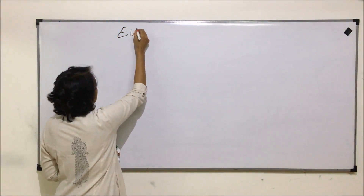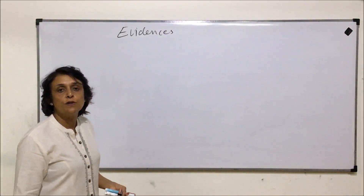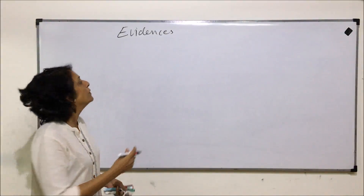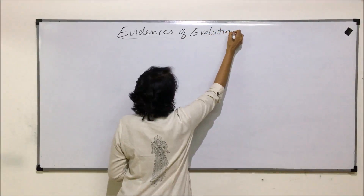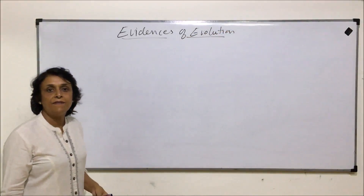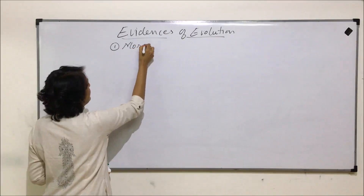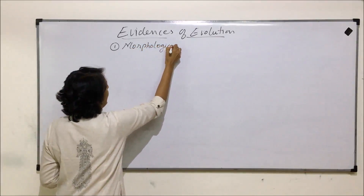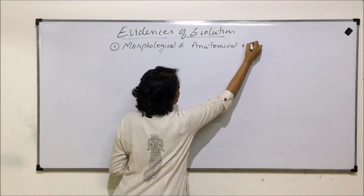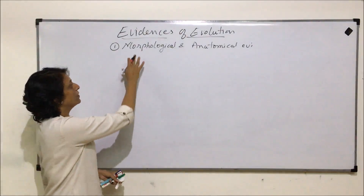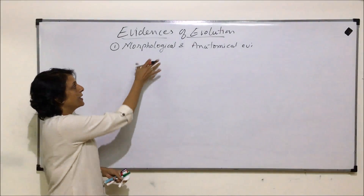Evidences are actually the structures or the proofs which tell us that a particular pattern of evolution has taken place. We classify these various evidences under certain categories. The first is morphological and anatomical evidences, where we talk about structural things which are similar or different in various organisms.